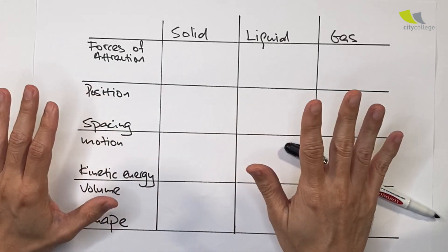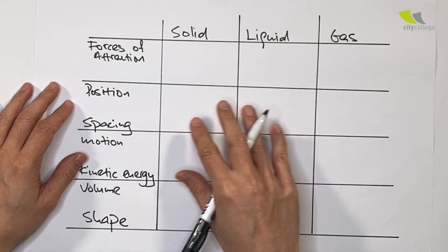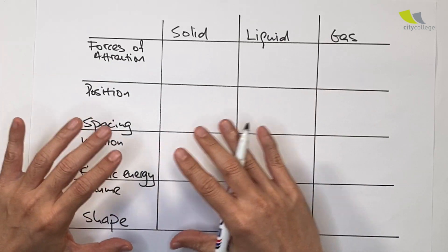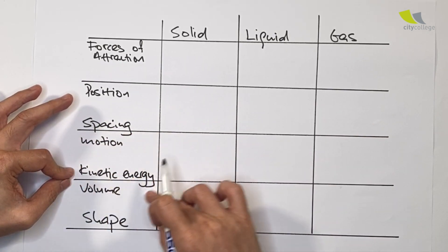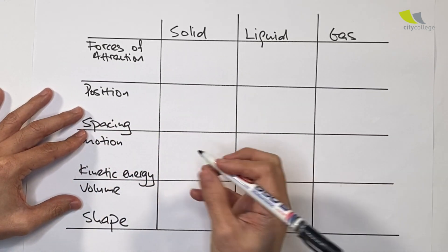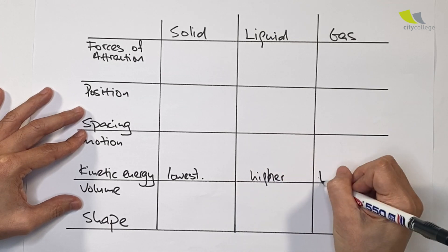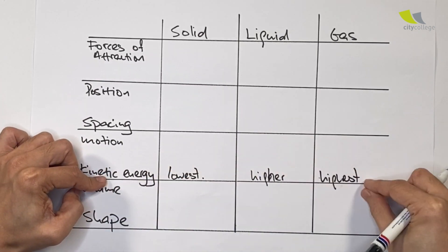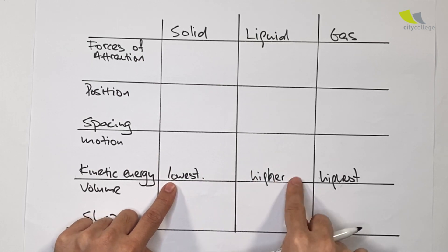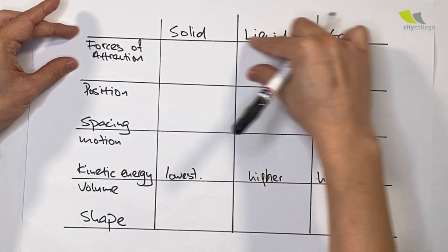The first series is going to be on the kinetic model of matter. Before we go and tackle the questions, let's have a quick overview of kinetic theory of matter. Like the name suggests, kinetic theory is about the motion of particles. If we compare the kinetic energy of particles in solid, liquid, and gas — solid is the lowest, liquid is higher, and gas is highest. So incrementally they are constantly moving: solid moves the lowest, liquid is slightly faster, and gas is fastest.